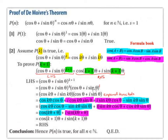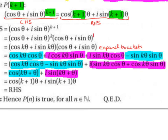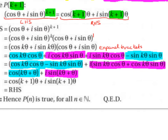We bring down the cos θ + i sin θ, then expand the brackets. cos kθ multiplied by cos θ is cos kθ cos θ; cos kθ multiplied by i sin θ is i cos kθ sin θ. Then i sin kθ multiplied by cos θ is i sin kθ cos θ; and i sin kθ multiplied by i sin θ gives minus sin kθ sin θ, because i × i = i² = −1.